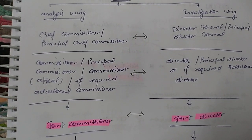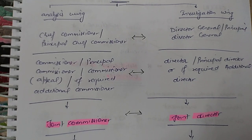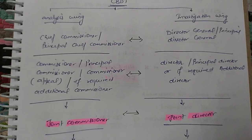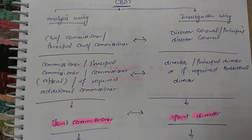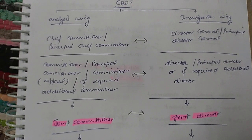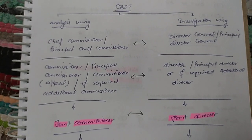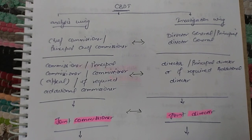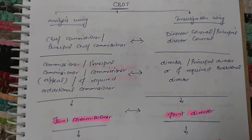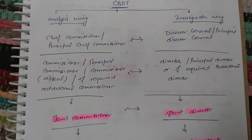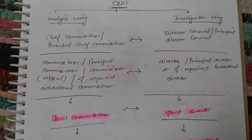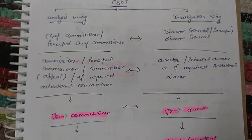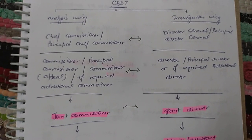Above these authorities we have the Chief Commissioner and the Principal Chief Commissioner in the Analysis Wing, and parallel to these we have the Director General and the Principal Director General under the Investigation Wing. These two departments work parallel to each other. The Analysis Wing actually does your assessment — they look into your returns — and if any investigation is required, the Investigation Wing comes into the picture.